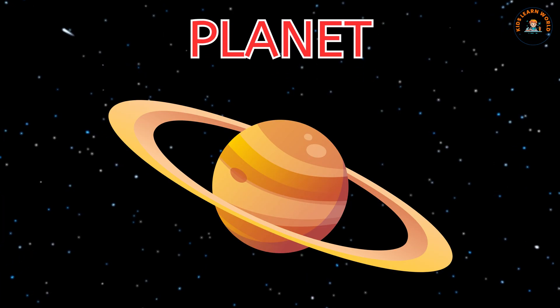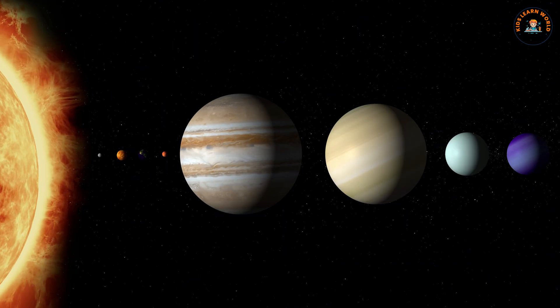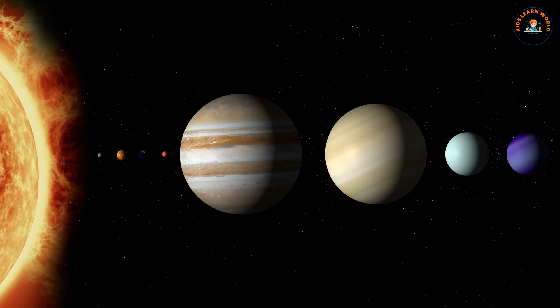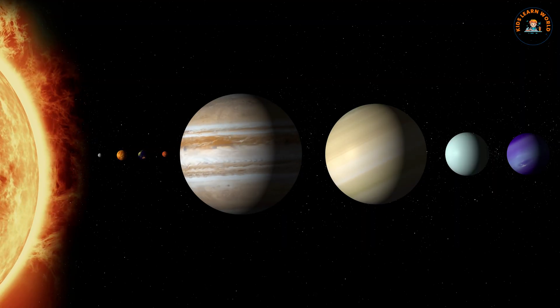This is a planet. Yay! Planets are big round worlds that travel around stars like the sun. Some are hot, some are cold, and some even have shiny rings.